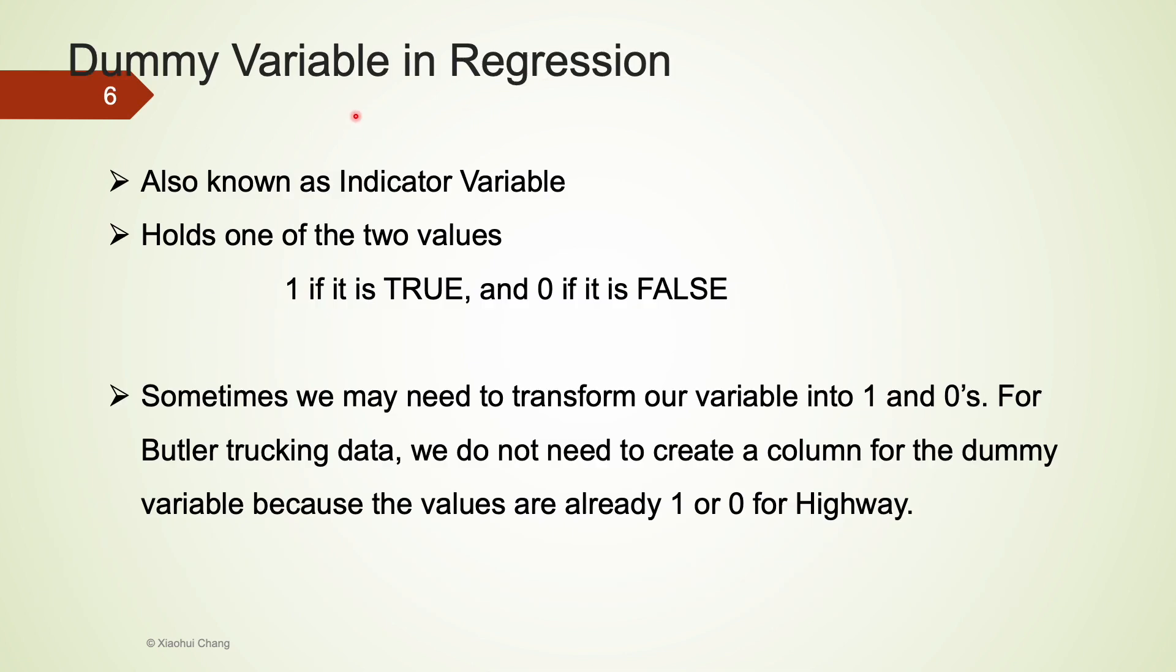The highway variable we just saw can also be called a dummy variable or indicator variable. This type of variable only takes two values, 1 if it is true and 0 if it is false. Sometimes we may need to transform our variable into 1s and 0s. For our trucking data, we do not need to create a column for the dummy variable because the values are already in 1 and 0 for highway.